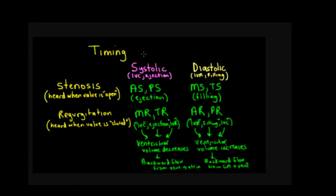Let's review murmurs again, looking at timing. For valvular lesions there are two major categories. There's stenosis, where we hear the turbulent blood flow murmur when the valve is open. For the systolic type, the only valve that's open is the semilunar valve during ejection, so we have aortic or pulmonic valve stenosis. For diastolic murmurs, we hear those during filling — the only time during diastole where we have a valve open — in this case the AV valve, giving us mitral stenosis and tricuspid stenosis. Stenosis murmurs are heard when there's forward flow across an open valve.